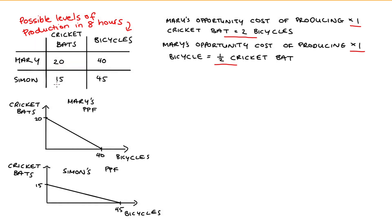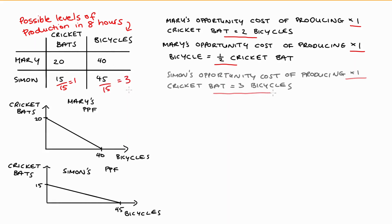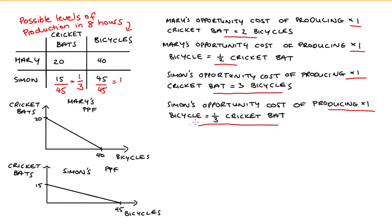Let's have a look at Simon now. If Simon makes 15 cricket bats, he gives up 45 bicycles. Dividing both sides by 15, Simon gives up three bicycles each time he produces one cricket bat. Thinking about Simon's opportunity cost of producing one bicycle — dividing both sides by 45 — if Simon makes one bicycle, he gives up a third of a cricket bat.